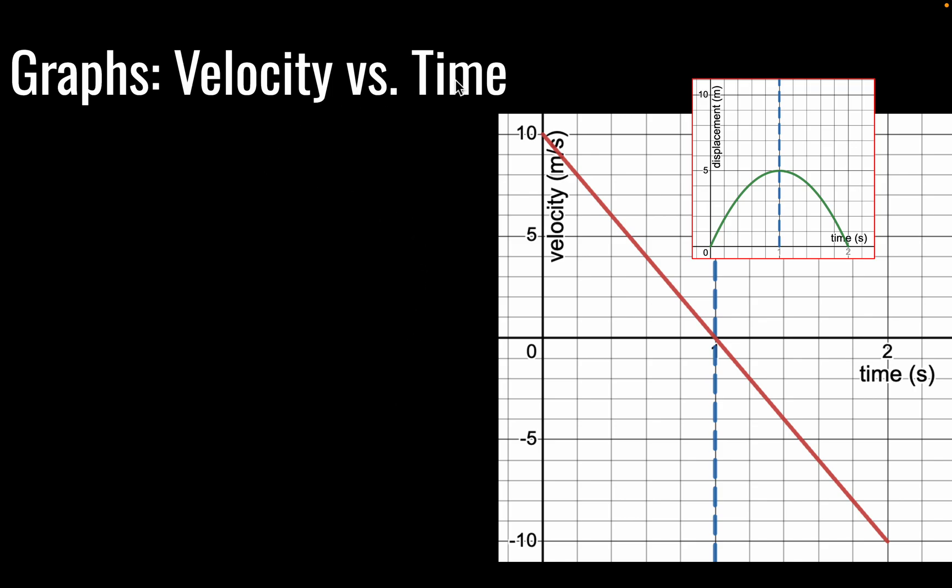Okay, so here we have a velocity versus time graph. And this is showing what I demonstrated earlier. And a velocity versus time graph for an object under constant acceleration will just be a straight line.